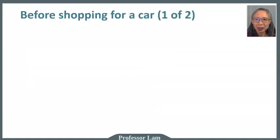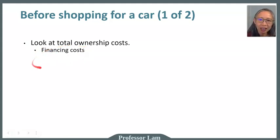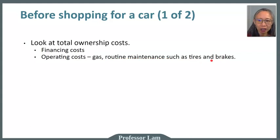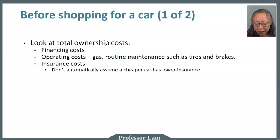Before we start looking at cars, let's take a look at the total cost of ownership. A lot of times when people think about buying a car, they focus on the financing cost — how much is the car payment? But your operating cost is just as important. Operating costs include gas and routine maintenance such as tires, brakes, and oil changes. Another very high cost that people oftentimes don't take into account until they are at the car dealership is insurance. Insurance costs are very expensive, and don't always assume that a cheaper car has lower insurance.